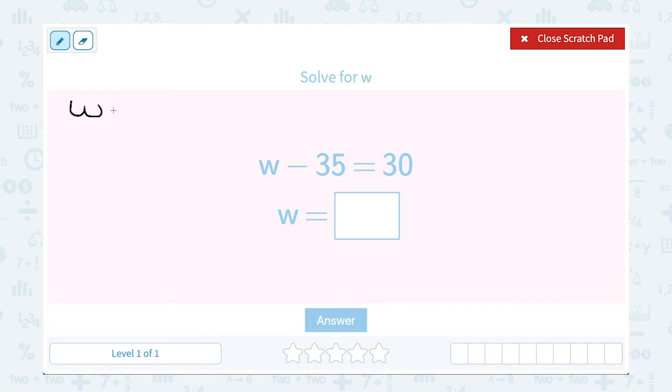If I have W minus 35 is equal to 30, what I want to do is look where the W is. Notice the W is on the left side. So anything that is on the same side as my variable, I want to try to move away or cancel out so that I have my variable alone, because when I get W by itself, then I can say I solved for W. It's that minus 35 that I want to get rid of.